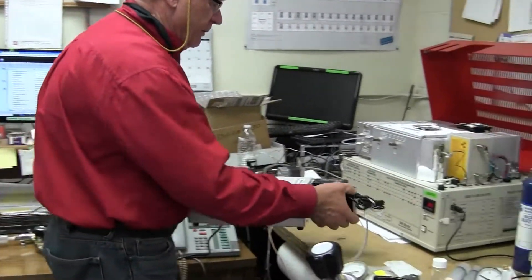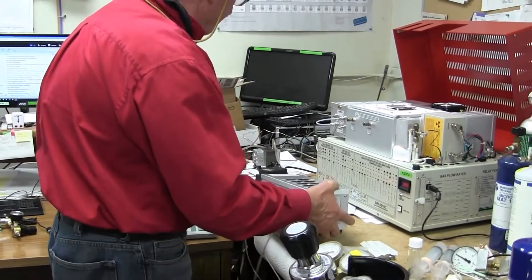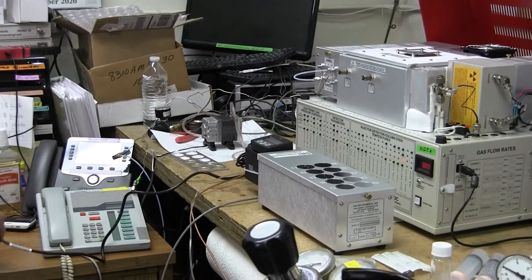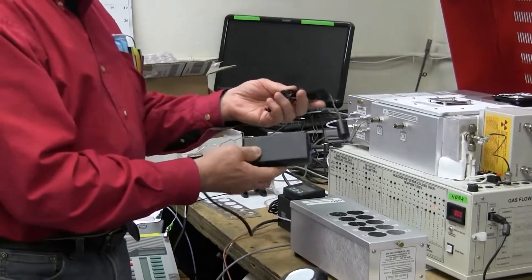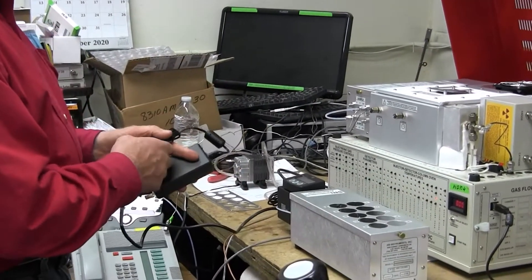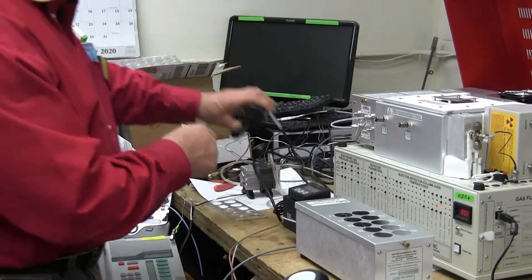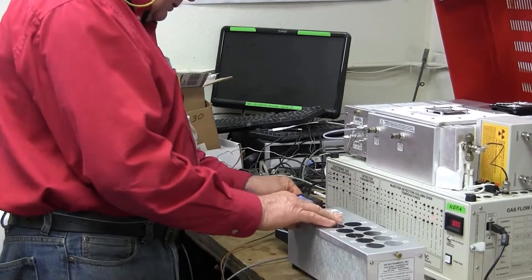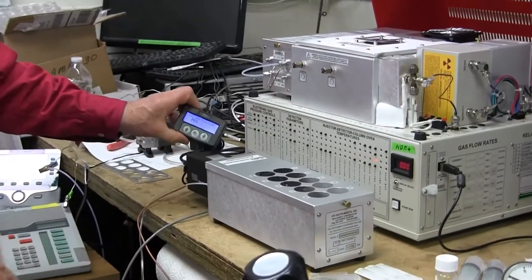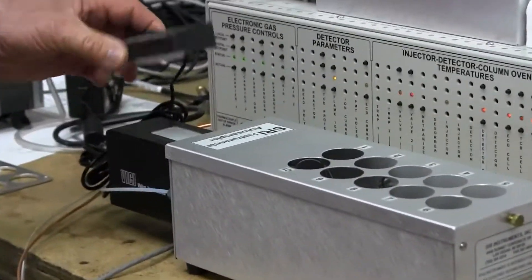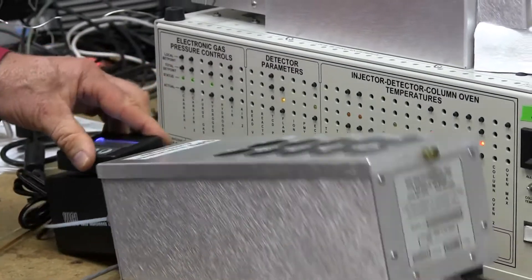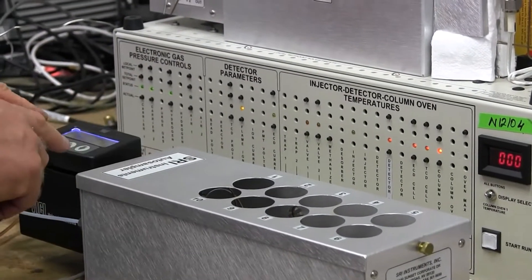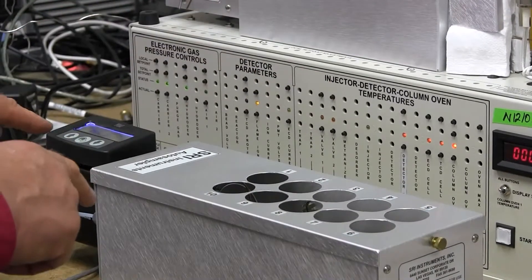So the auto sampler has to be connected to some kind of a power source, which is this common 24-volt desktop power supply, just like for a computer. So that plugs in, and then when it does, the display lights up. So this allows you to control the position of the vials independently of the GC if you want to.